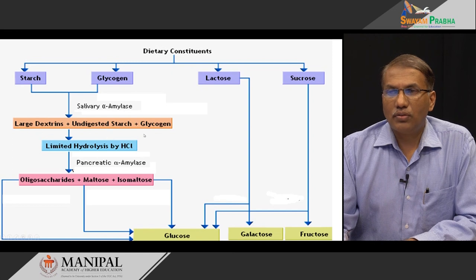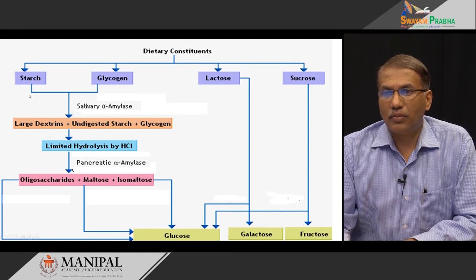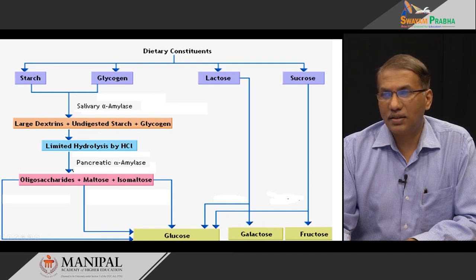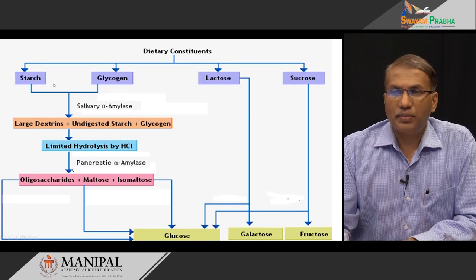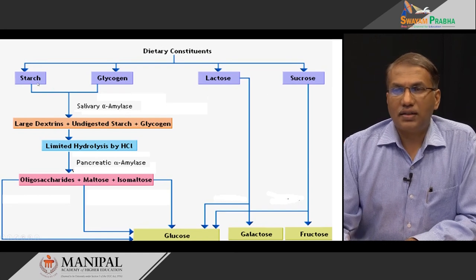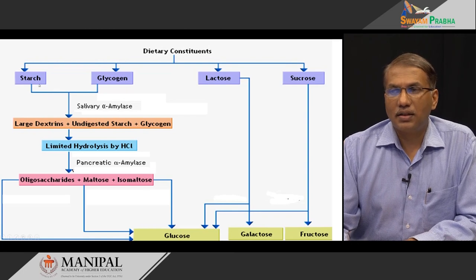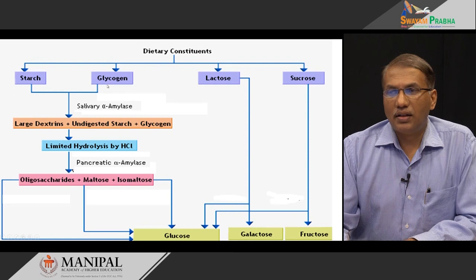Most of the carbohydrate we consume is either polysaccharides or simpler sugars like lactose and sucrose. The polysaccharides predominantly contain starch and glycogen, starch coming from vegetarian sources and glycogen coming from non-vegetarian sources.